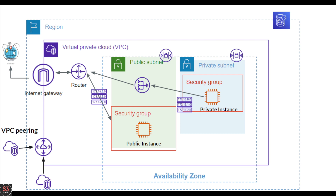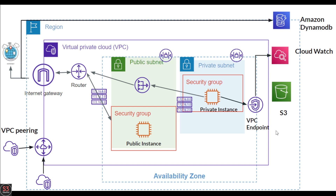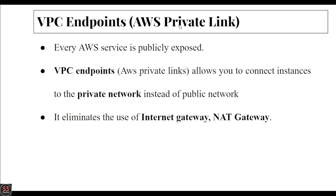Let's say we have an Amazon DynamoDB service which is publicly accessible through the internet — we can easily access DynamoDB through a public instance. But if we want to access AWS services like CloudWatch and S3 bucket through a private instance, then we have to create a VPC endpoint. Through the VPC endpoint we can access the CloudWatch service and the S3 bucket service through the private instance.